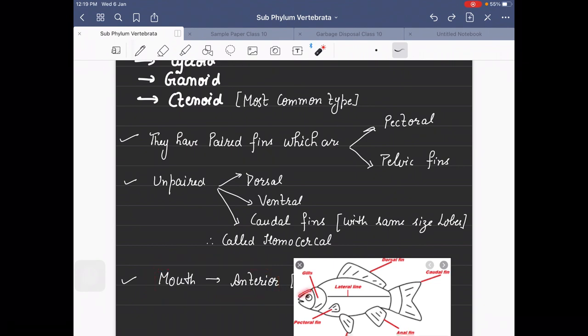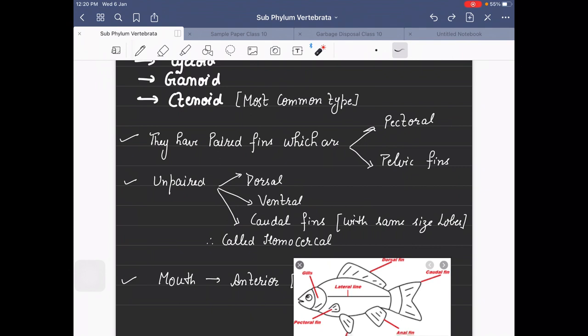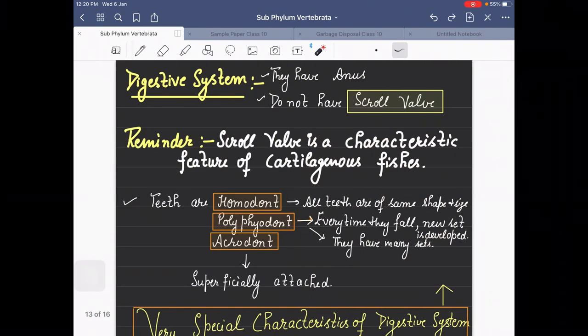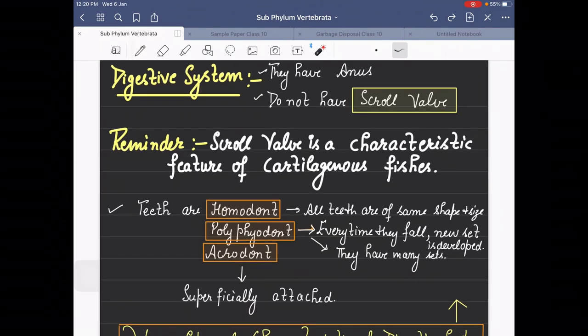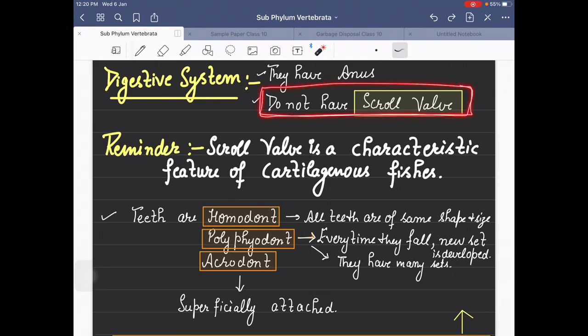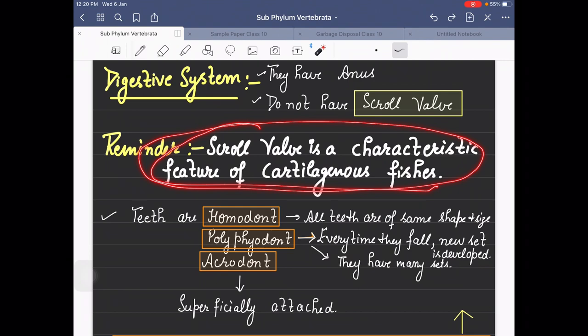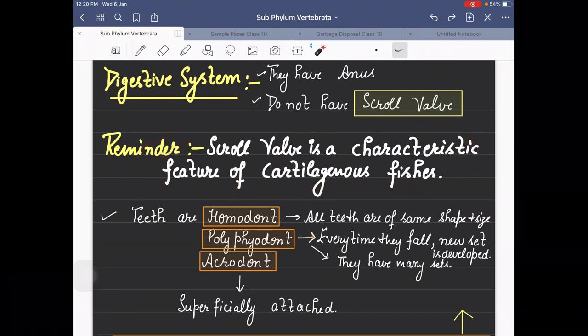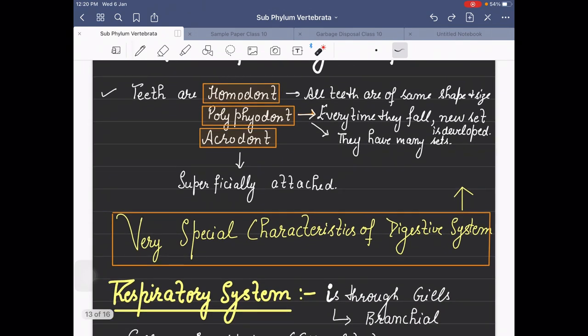The mouth is completely anterior, meaning right in the front. Now for the digestive system, they have an anus. One thing they do not have, which is different from cartilaginous fishes, is the scroll valve. The scroll valve is a characteristic feature of cartilaginous fishes but is absent in bony fishes.